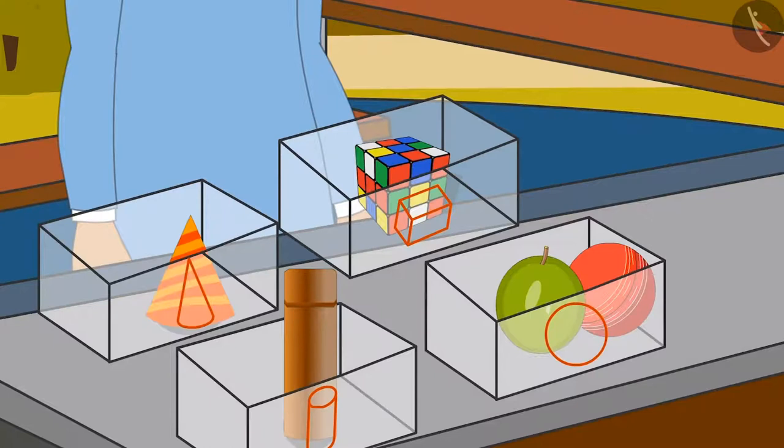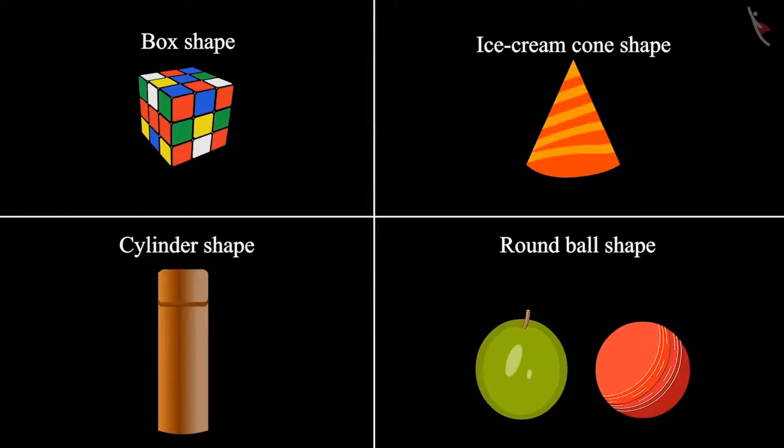Chotu and Neha identified the shapes of all the objects and placed them in different boxes. So children, did you see how Chotu and Neha identified four different shapes and kept them in different boxes? Like a round ball shape, ice cream cone-like shape, box-like shape, and cylinder shape. That was all for today.